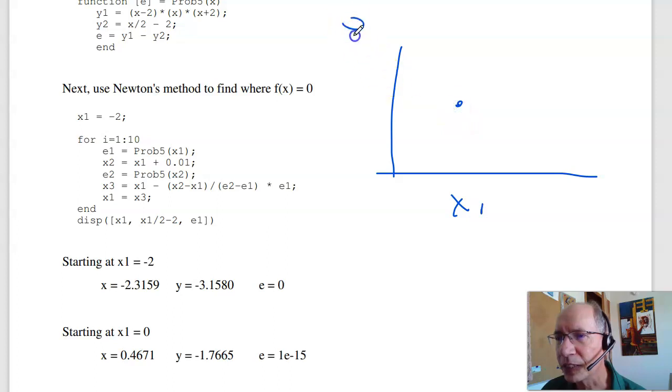It's going to take a straight line and figure out where the zero crossing is, assuming that my function is linear. That's what that does. That's Newton's method.